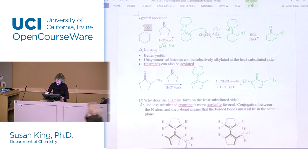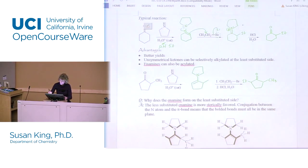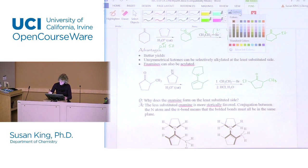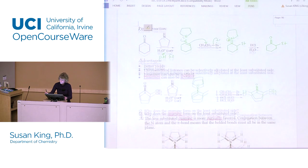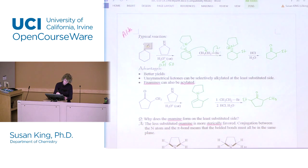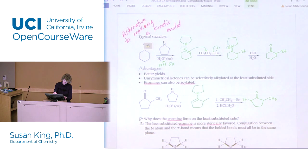An alternative for the thermodynamic enolate is to make an enamine. Actually, let me label that — this is an alternative to making a kinetic enolate using LDA.